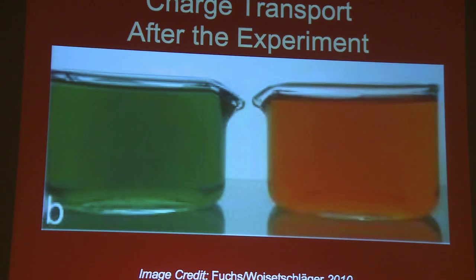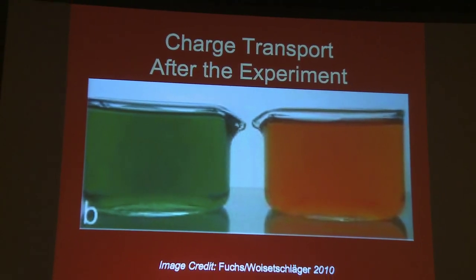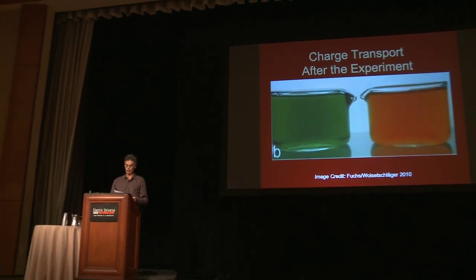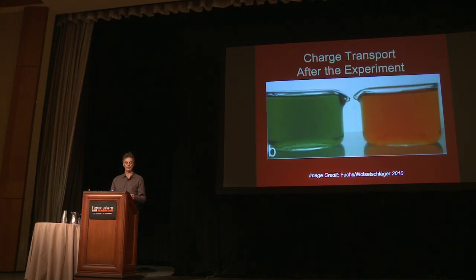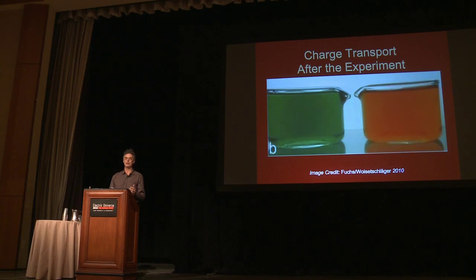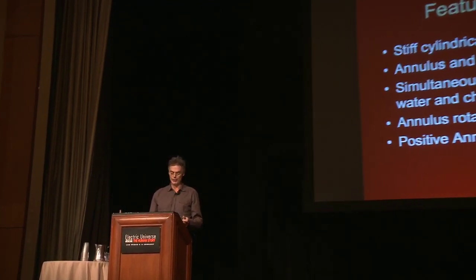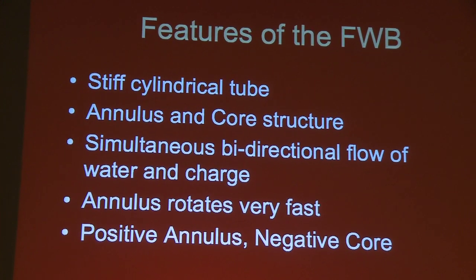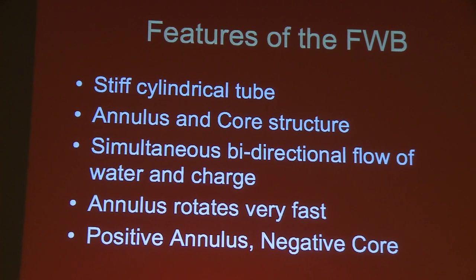At the end of the experiment, you can see the difference in pH in the beakers. Armstrong, back in 1893, who was the first to discover the floating water bridge — the experiment was then forgotten for about 100 years — found that the annulus is positively charged and the core is negative. So we can see how a current flows across the bridge: positive charge in one direction and negative charge in the other is equivalent to a current in one direction. To summarize: a floating water bridge is a stiff cylindrical tube with an annulus and core structure, with simultaneous bidirectional flow of water and charge, the annulus rotating fast around the core, with the annulus positive and the core negative.